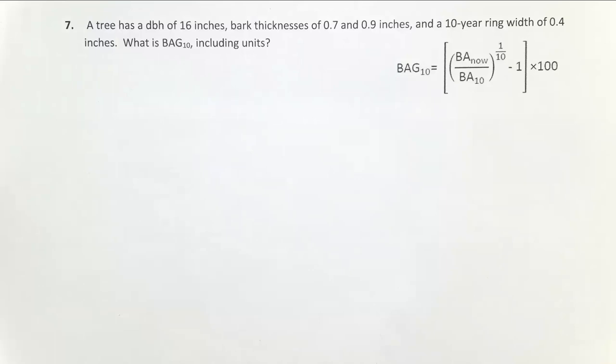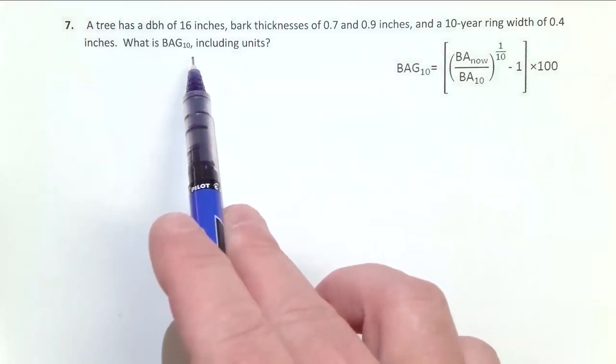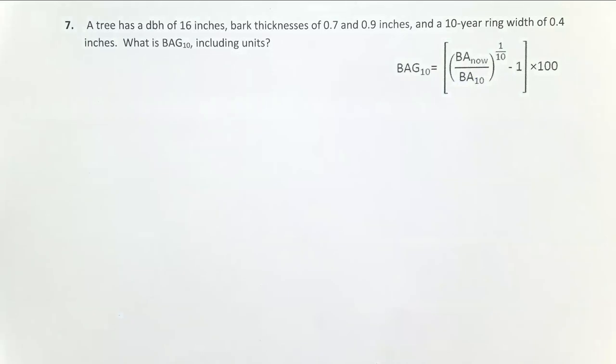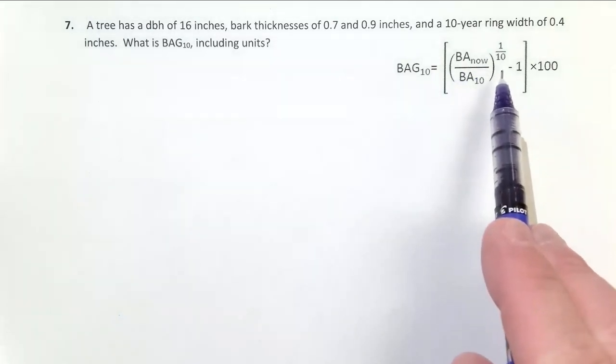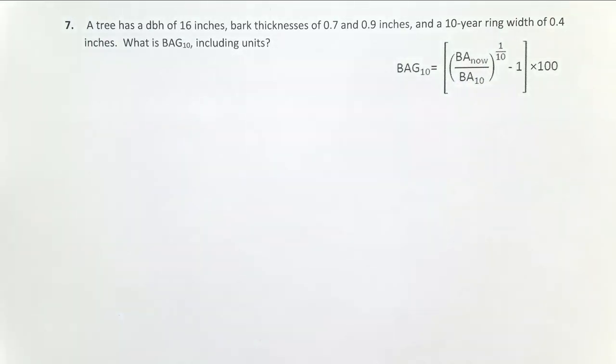Problem seven is our second basal area growth rate problem. The only difference between this problem and problem number six is that this is calculating BAG₁₀, or the basal area growth rate over the last 10 years. That really only reflects a change in the exponent right there from one-fifth to one-tenth.